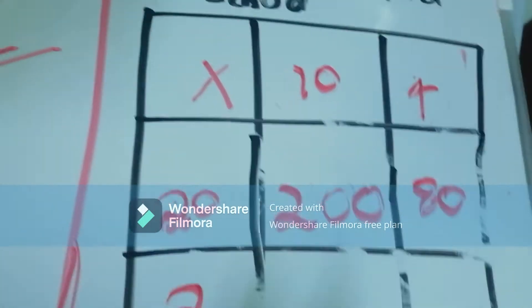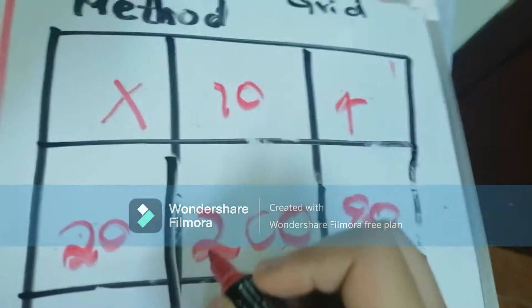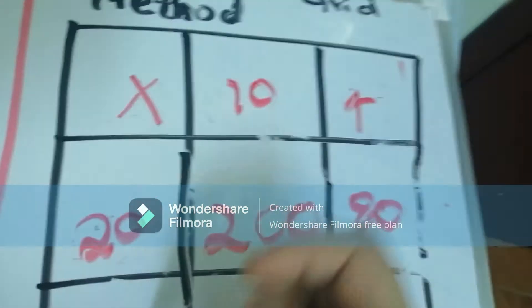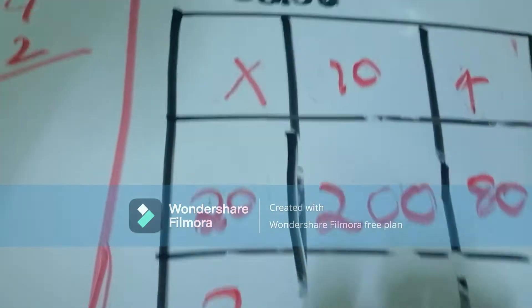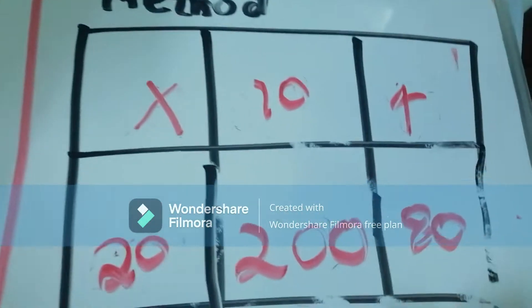Then we have to multiply 2, 10, 20, 2, 4, 8.